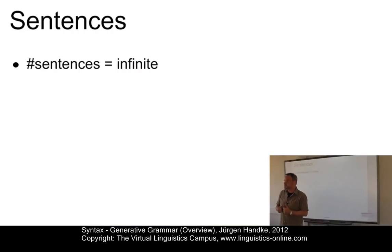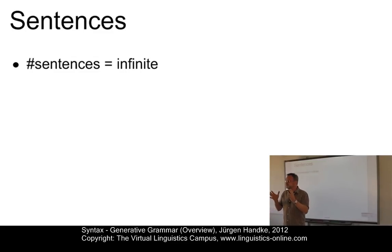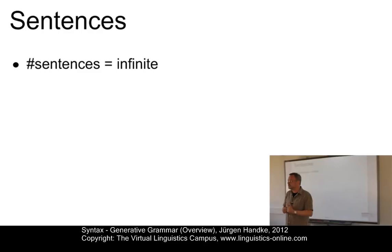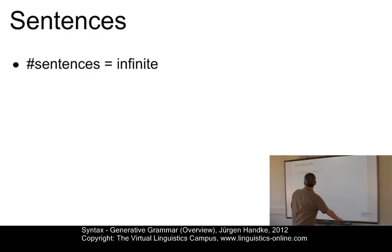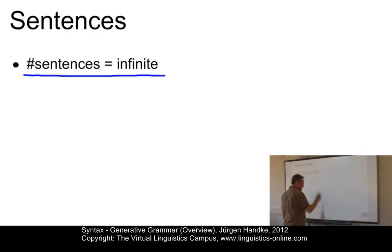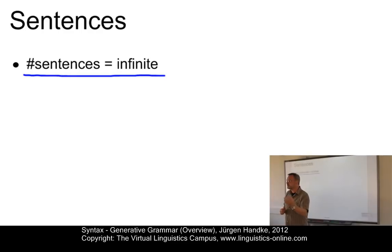The simplest imaginable syntactic theory is a grammar that consists of a list of all well-formed sentences of a language. However, such a list would be too long since there are infinitely many sentences of English — the number of sentences in a language is infinite. Two principles are responsible for this non-finite character of natural language.